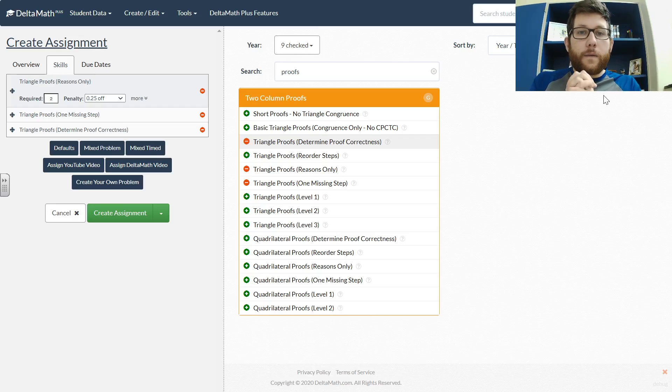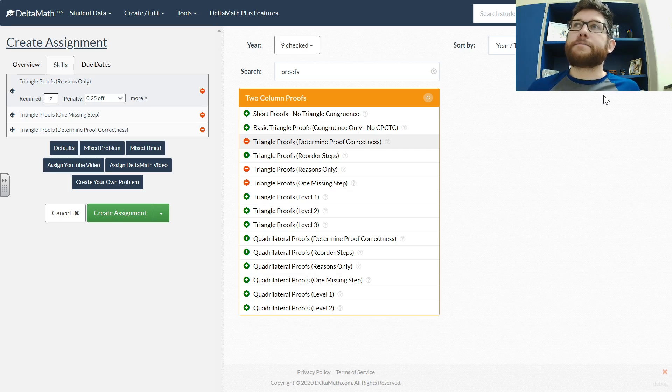Alright guys, welcome back. This is our big assignment for the week. Outside of the quarter test at the end of the week that's kind of cumulative, this is the big assignment for proofs for triangles. Now up until this point we've done proofs that are pretty routine. They kind of follow a set pattern: we do the proof, we do the SSS, SAS, then we do CPCTC and we're done.